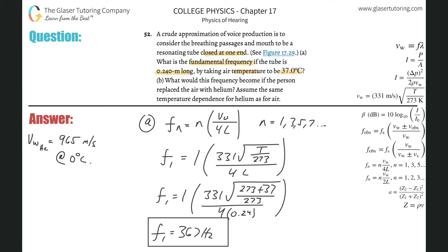Letter B. What would this frequency become if the person replaced the air with helium? Assume the same temperature dependence for helium. So basically our formula, the VW formula, I can make that adjustment. So this is for letter B.